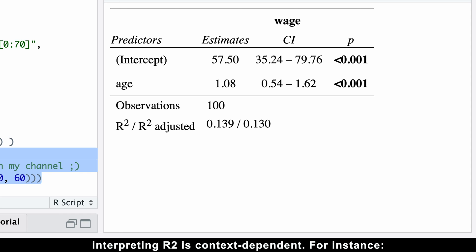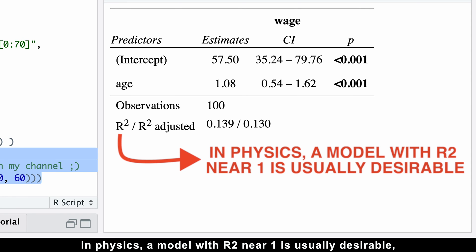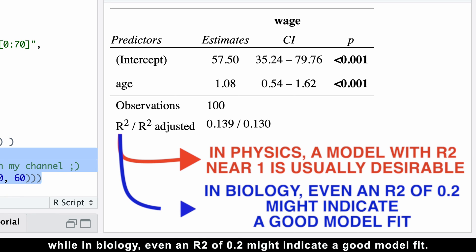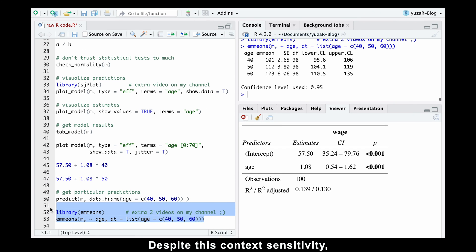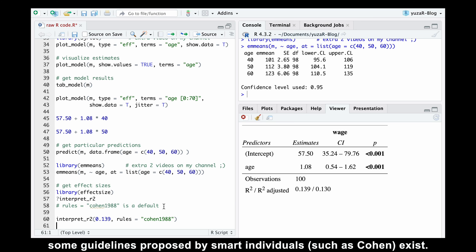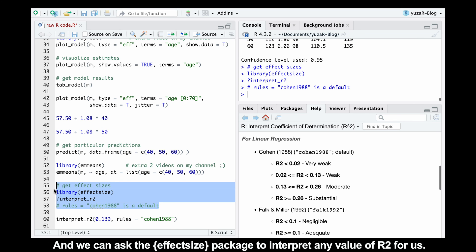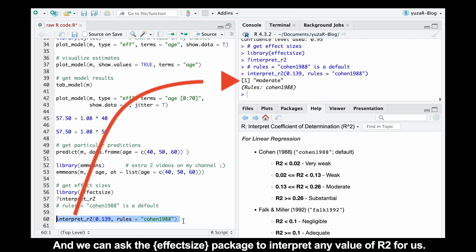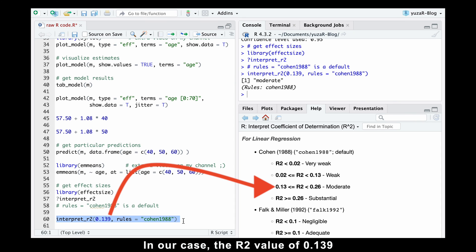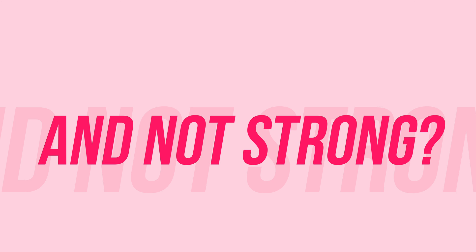However, interpreting R-squared is context dependent. For instance, in physics, a model with R-squared near 1 is usually desirable, while in biology, even an R-squared of 0.2 might indicate a good model fit. Despite this context sensitivity, some guidelines proposed by smart individuals such as Cohen exist, and we can ask the effectsize package to interpret any value of R-squared for us. In our case, the R-squared value of 0.139 indicates a moderate relationship between age and salary. But why moderate and not strong?